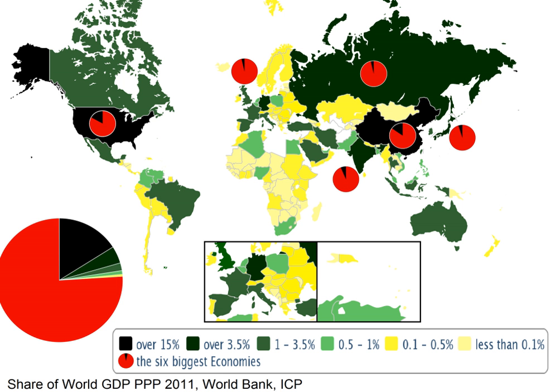As of 2017, the following 15 countries or regions have reached an economy of at least $2 trillion by GDP in nominal or PPP terms: Brazil, China, India, Germany, France, Indonesia, Italy, Japan, South Korea, Mexico, Russia, Turkey, the United Kingdom, the United States, and the European Union.